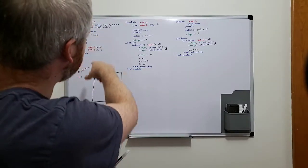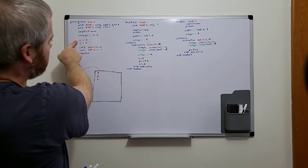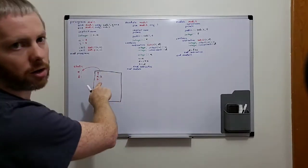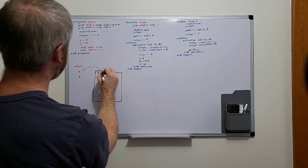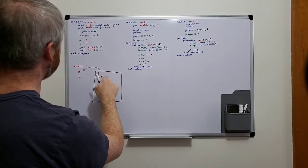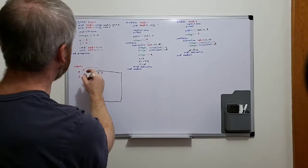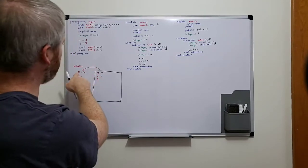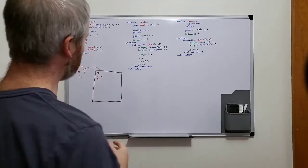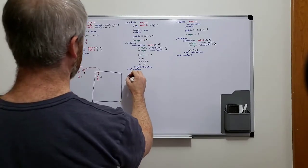Now we're actually ready to start executing this program. The first thing we do is assign 3 to the variable A. Next we assign 4 to the value of G — but really G refers to E over here in our static storage, so really what we've done is assign 4 to the value of E. Next we're going to call a subroutine, and that's going to set up a new scope of execution for us.